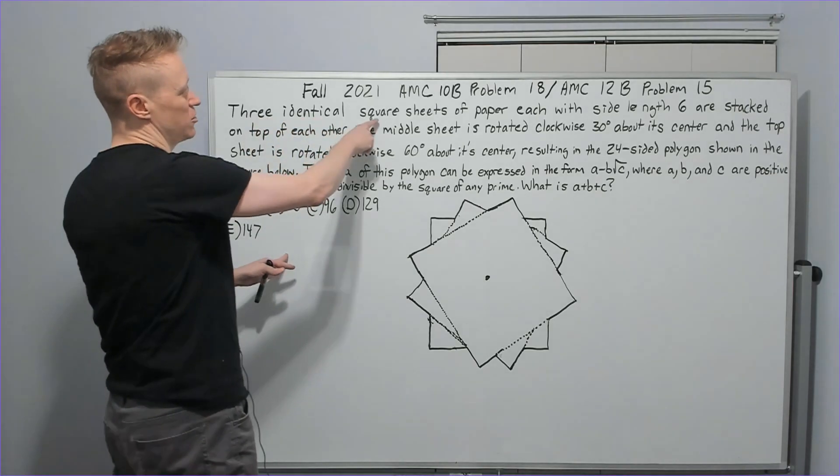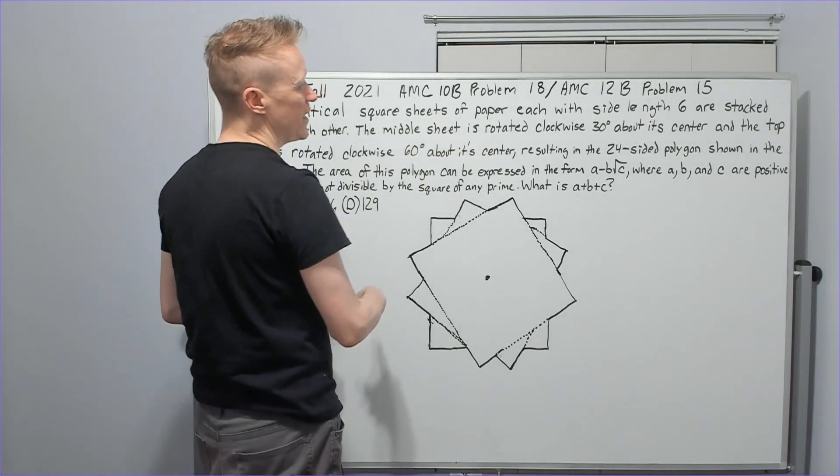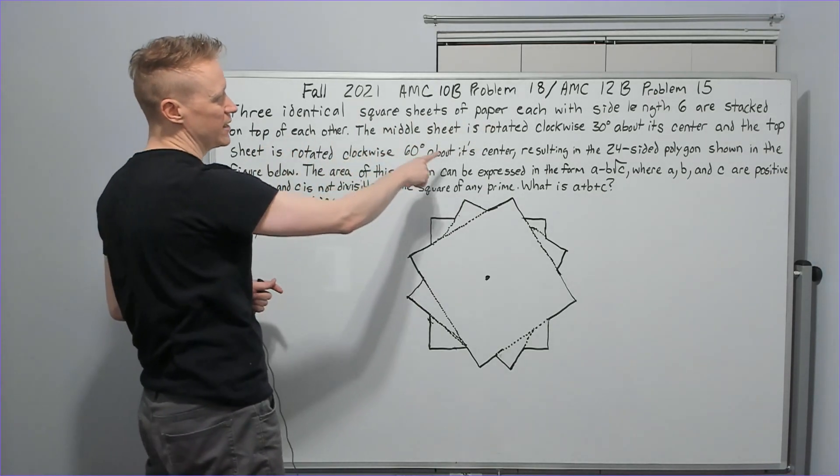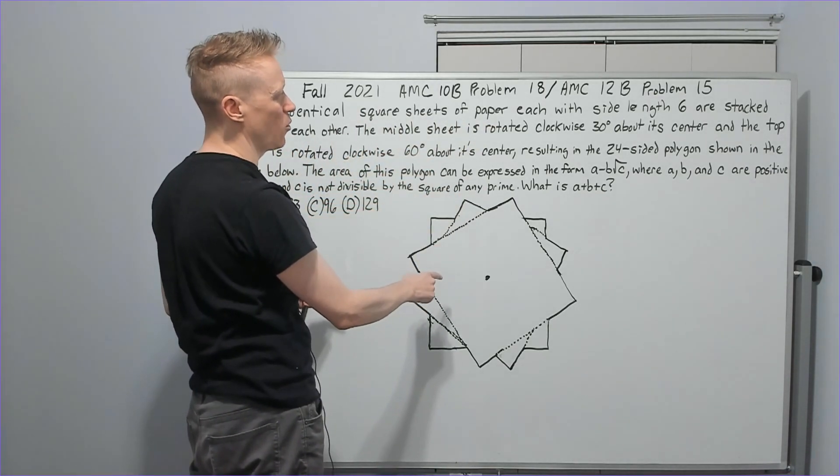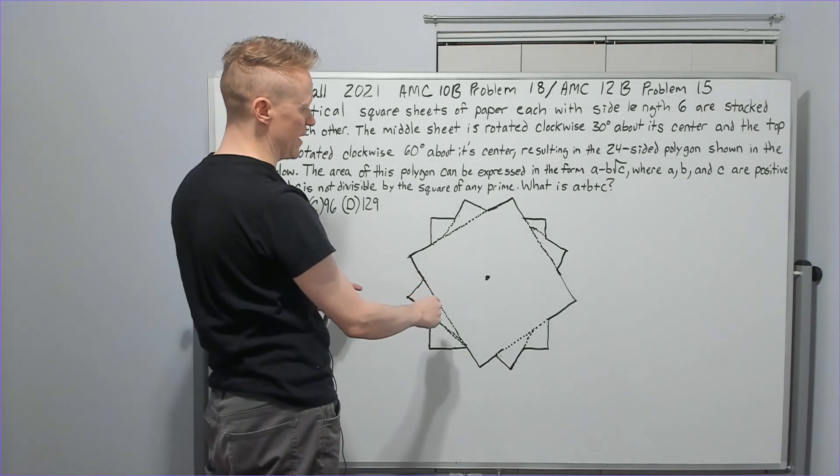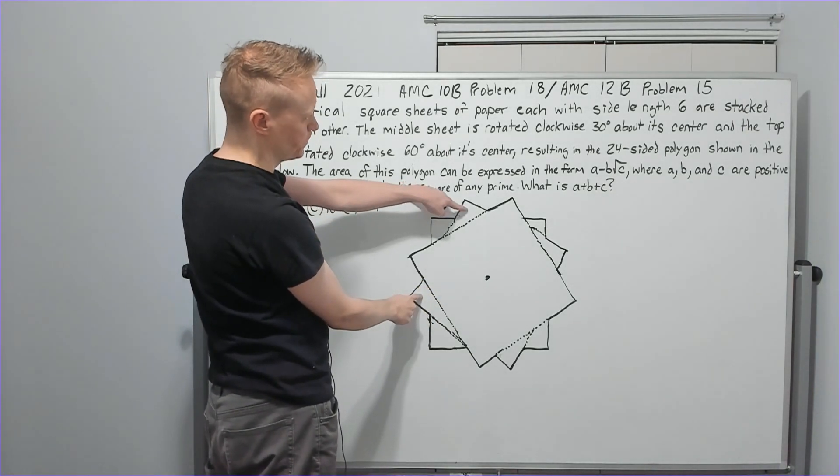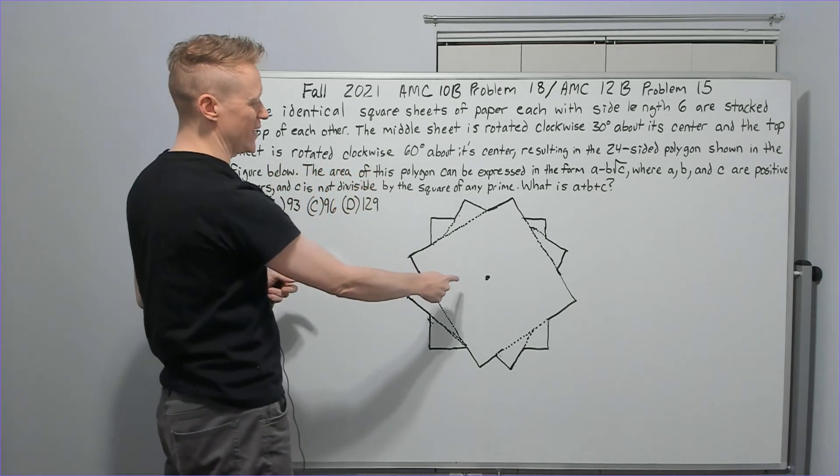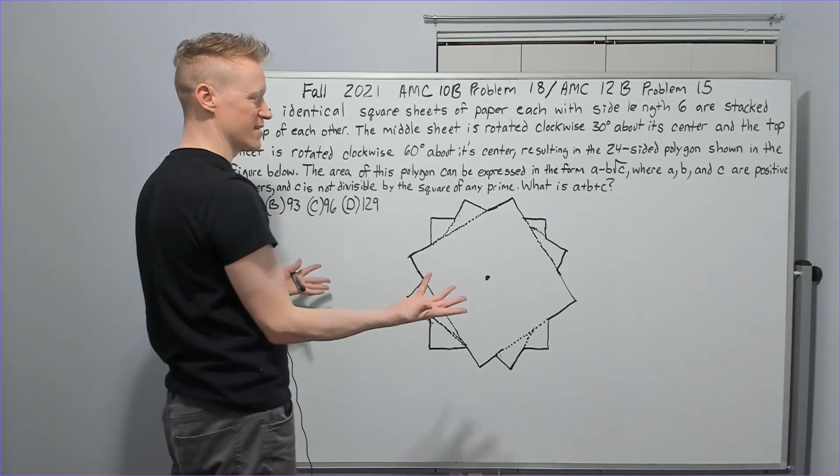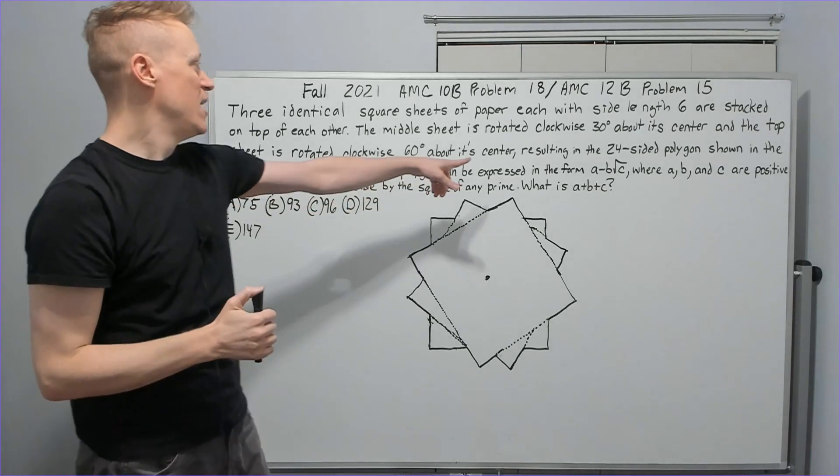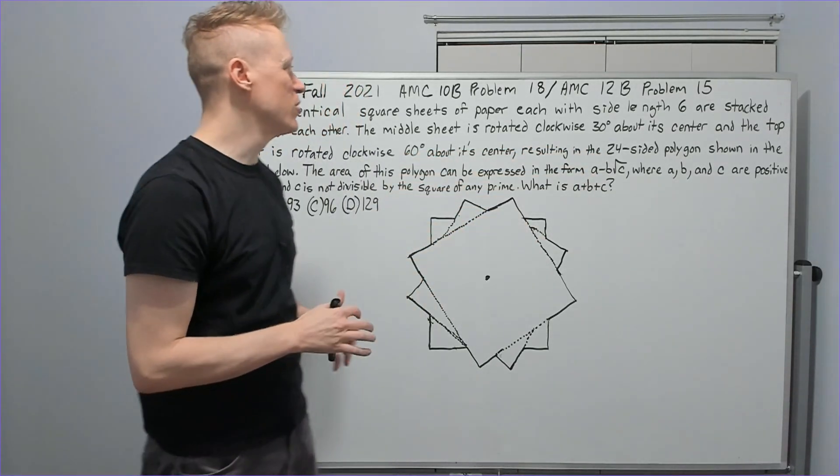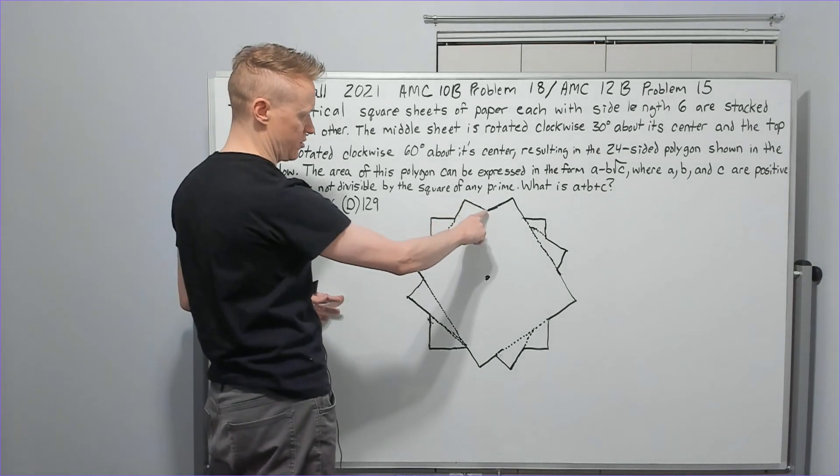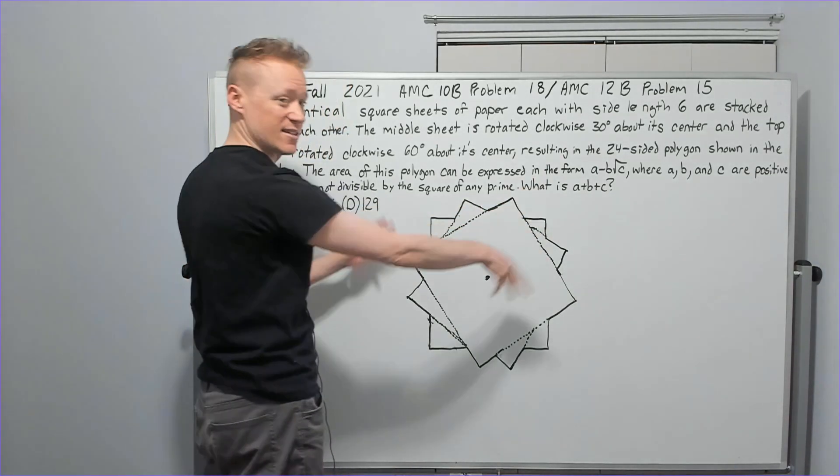Three identical square sheets of paper, each with side length six, are stacked on top of each other. The middle sheet is rotated clockwise 30 degrees about its center, that's this one, and the top sheet is rotated clockwise 60 degrees about its center. They all have the same center resulting in the 24-sided polygon. What does that mean? This is one of the 24 sides, two, three, four, five, six, and six on each side, 24.